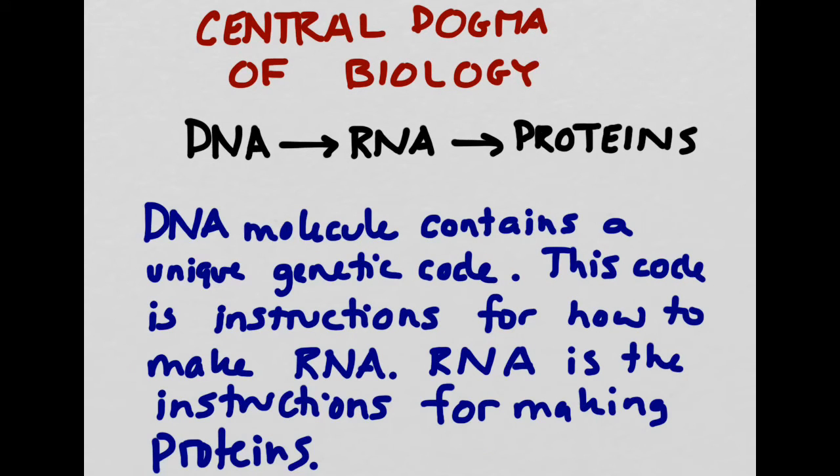RNA, in turn, is the instructions for how to make proteins, and it is the specific combinations of proteins that are present in the offspring which allows them to look similar and behave similarly to their parents. Now, this may seem like a roundabout way of passing on genetic instructions, but we'll understand it better once we look into the specifics of how DNA replicates and how it's passed on its code from parent to offspring.